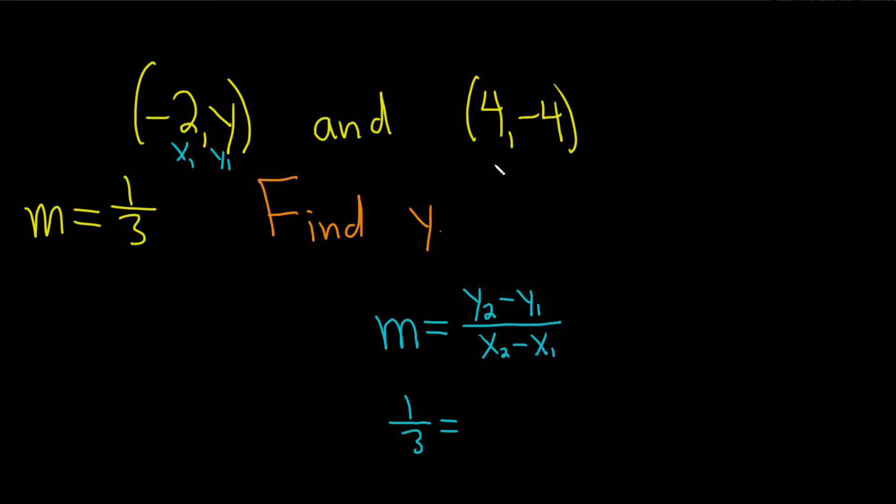So this is x1, y1, x2, y2. So y2, there we go. In the numerator, it's y2 minus y1, so negative 4 minus y. Right? y2 minus y1.